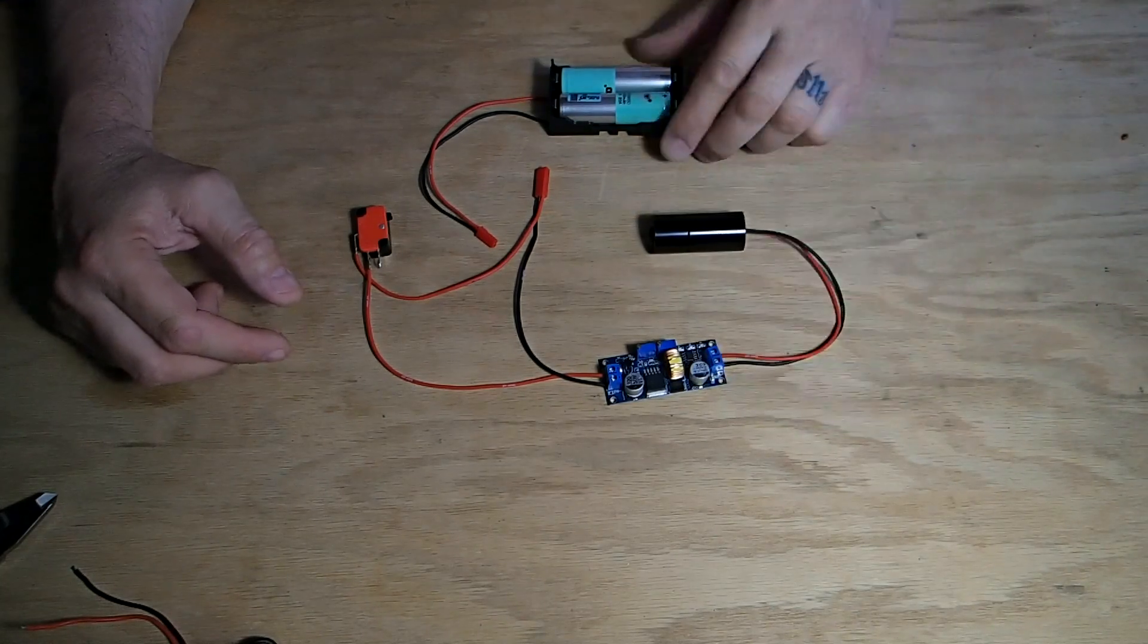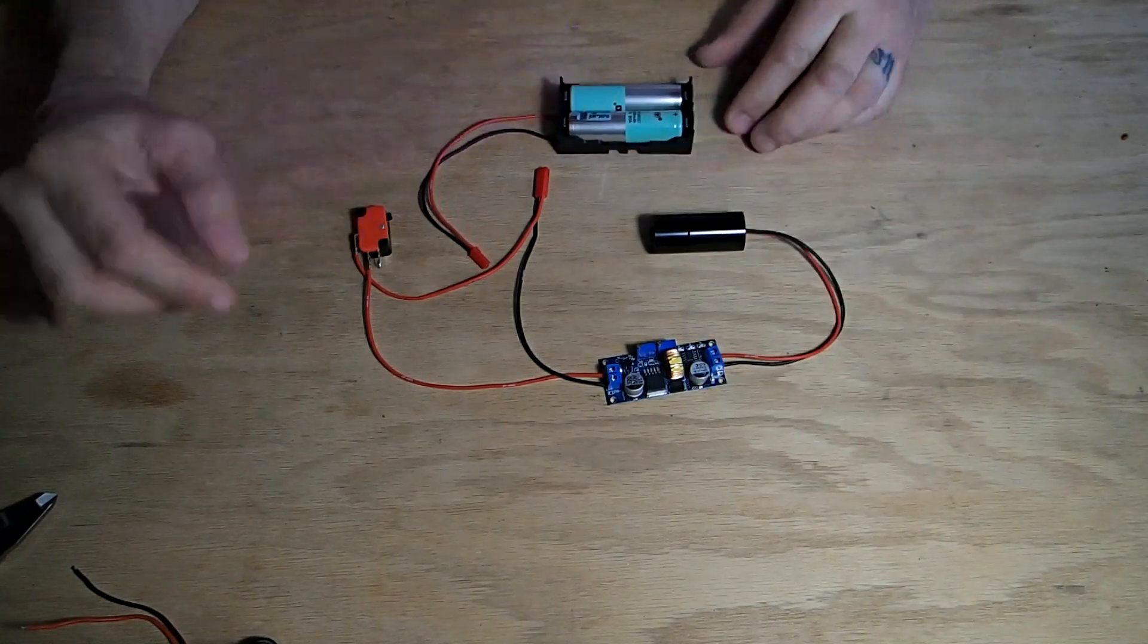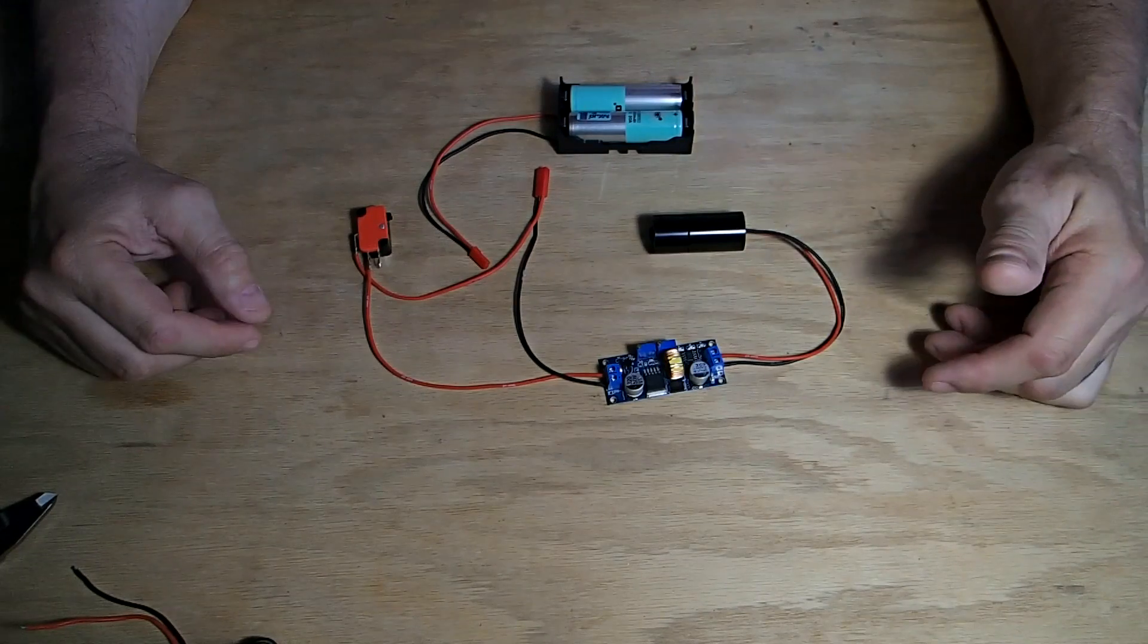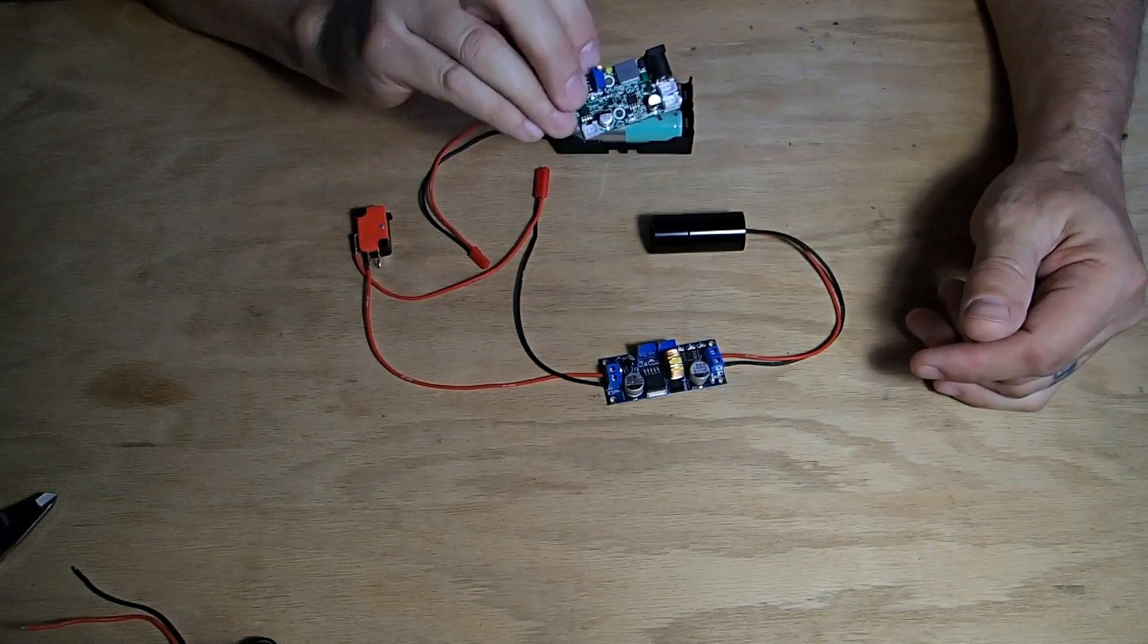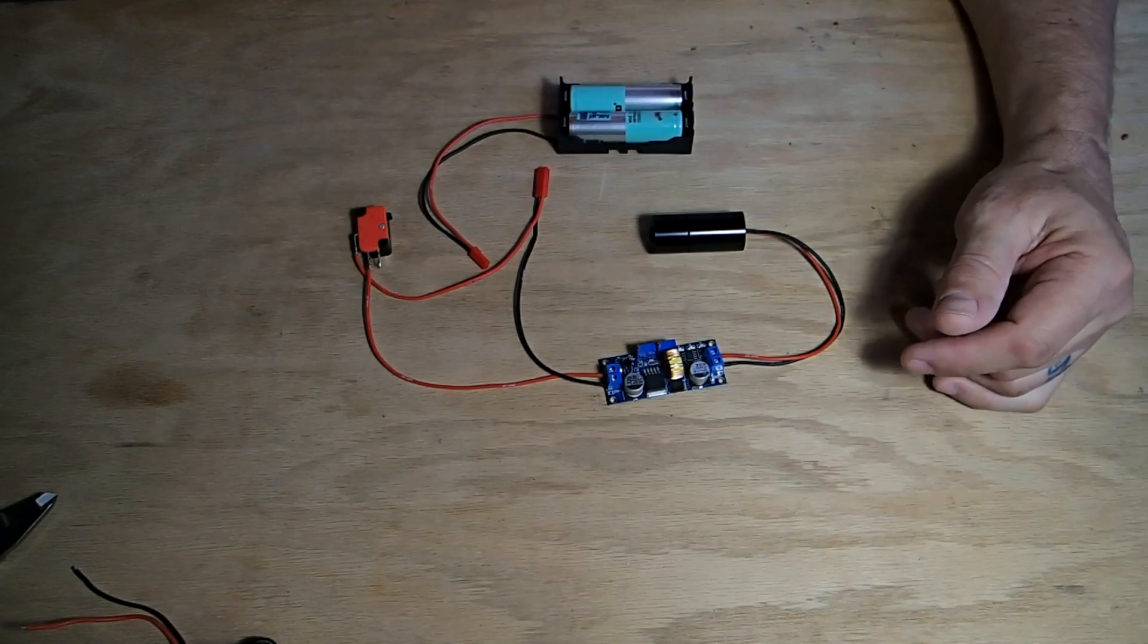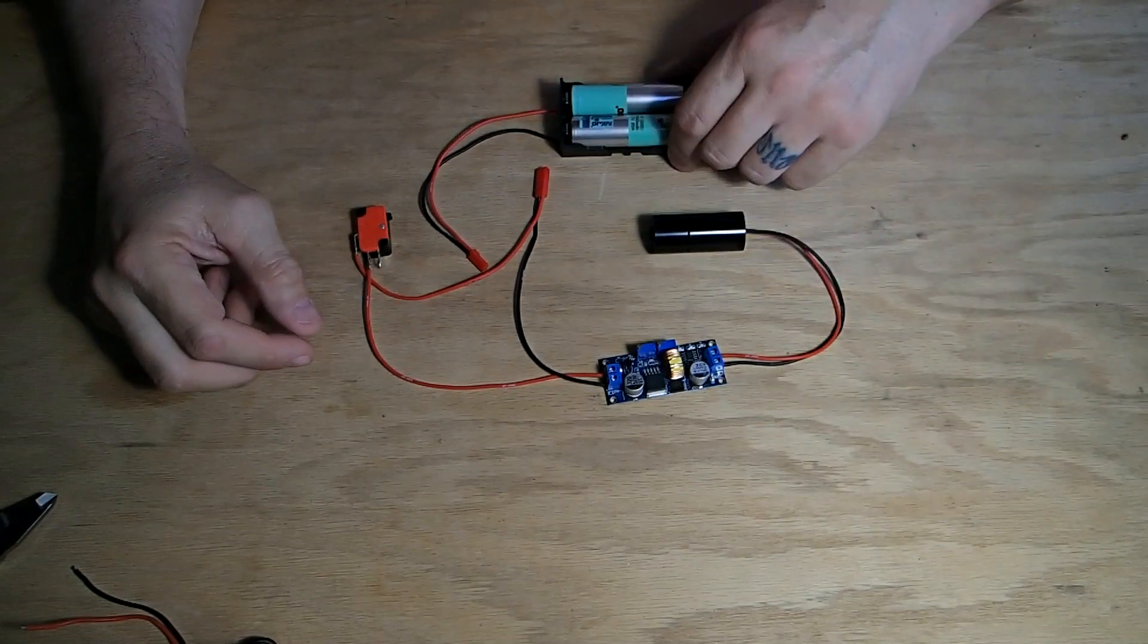What's nice about this regulator here is that it can run off just two batteries rather than having a 12 volt supply for the other. This guy right here needs 12 volts to work no matter what. Where this here can run off just two of these lithium batteries.